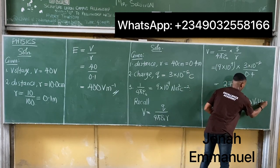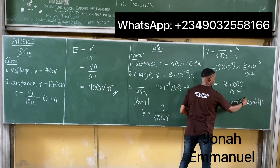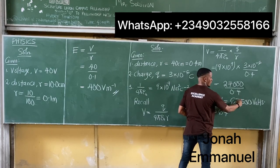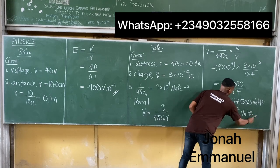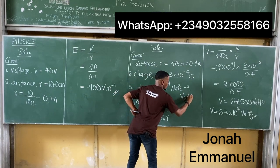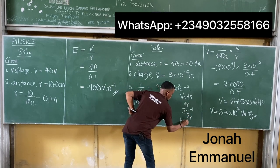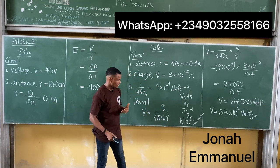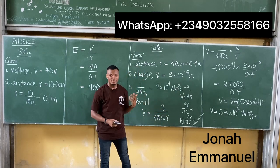Expressing this in scientific notation: 67500 = 6.75 × 10⁴ Volts. Take note that electric potential is measured in Volts, or Joules per Coulomb, or Newton-meters per Coulomb. Electric potential has three equivalent SI units. Any of these is acceptable.